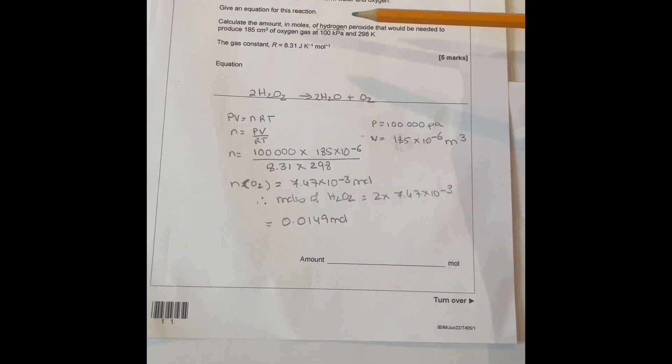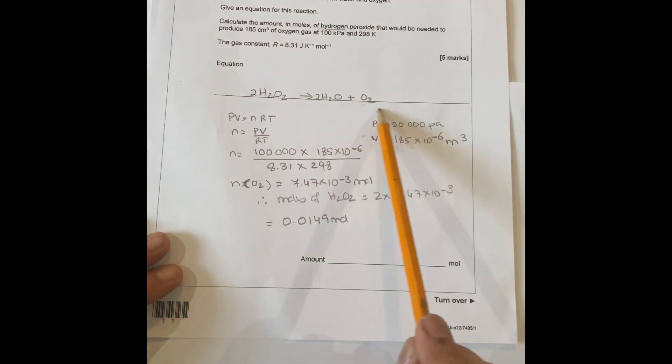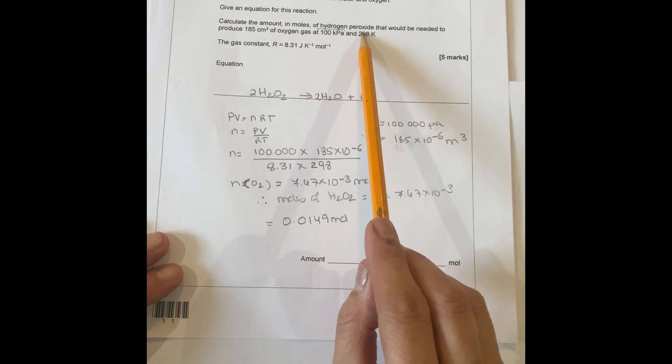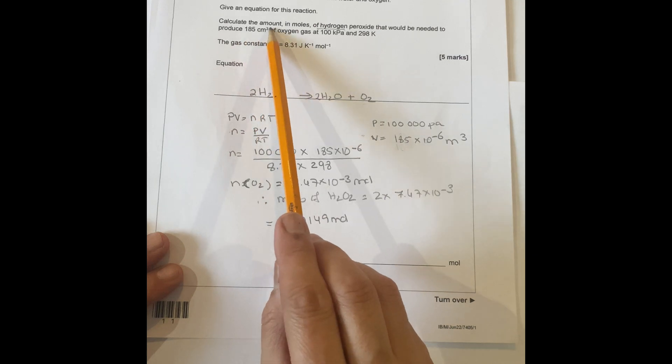Hydrogen peroxide decomposes to form water and oxygen. Given the equation for this reaction, you've got hydrogen peroxide to water and oxygen, then you balance it. Calculate the amount in moles of hydrogen peroxide that would be needed to produce 185 centimeter cubed of gas at 100 kPa and 298.